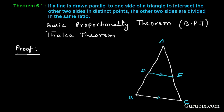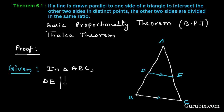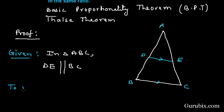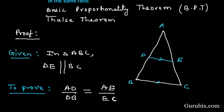This is given to us in the statement of the theorem. So we write what is given: triangle ABC, and line DE is parallel to BC. And what we have to prove: the other two sides are divided in the same ratio, that is, AD/DB = AE/EC. We have to prove this.